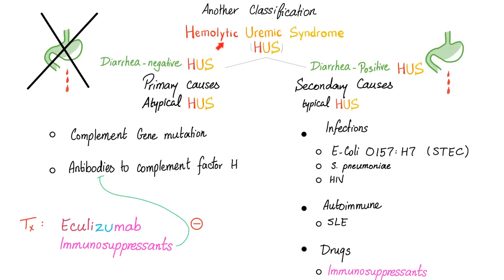There is another classification for HUS: primary and secondary. Primary is the same as diarrhea negative, the same as atypical, and happens in adults. Secondary is the diarrhea-positive HUS, typical, and happens in children. Now let's talk about atypical HUS, which is today's topic.